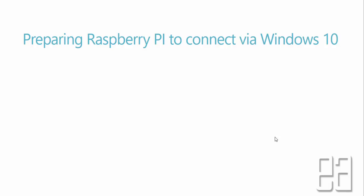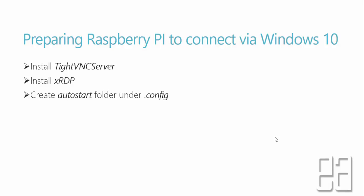Before starting to work with VNC, we need to first prepare our Raspberry Pi to connect via Windows 10. The preparation involves installing some packages on our Raspberry Pi's Ubuntu Mate operating system. The first thing is to install the TightVNC server, and then you need to install xrdp — again a package that you need to install on Ubuntu Mate.